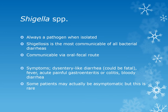Shigella is always a pathogen whenever isolated. It causes severe dysentery resulting in intestinal mucosal epithelial cell destruction. It is the most communicable of all bacterial diseases — very few organisms are needed to make a person sick. It is communicable via the fecal-oral route, and flies can also transmit it. Symptoms include dysentery-like diarrhea, which can be fatal, fever, acute painful gastroenteritis, colitis, and bloody diarrhea. People with Shigella are usually treated with antibiotics. The best way to prevent both Shigella and Salmonella is through hand washing.